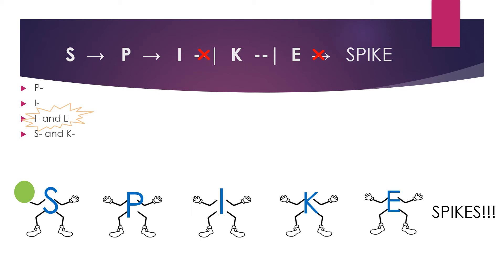spikes will not be produced because E is ultimately the piece that codes for this phenotype. So in the pathway, S produces P, but I is unavailable to block K from blocking E. E isn't present, so no spikes are produced.